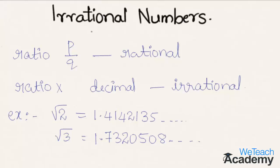So what is a rational number? A rational number is a ratio of two integers that can be written as p by q and are called rational numbers.